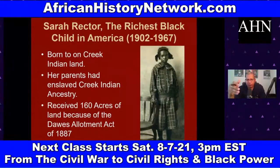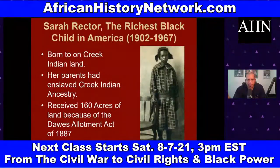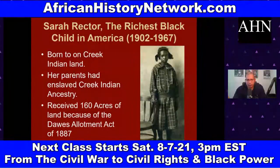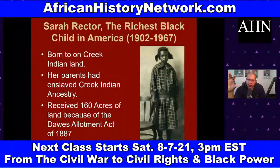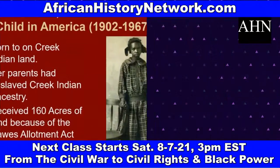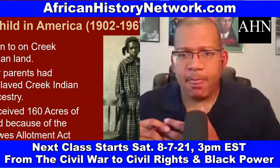Sarah Rector's family were descendants of enslaved Creek Indians, and her family got land because of the Black Freedmen Indian Treaties of 1866. This land redistribution also ties into the Dawes Allotment Act of 1887. We have to go through and understand all this history — this is why it's extremely important to understand what's taking place today.